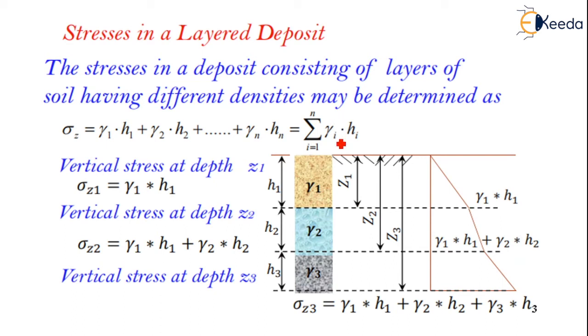What about the stresses in a layered deposit? The stress in a deposit consisting of layers of soil having different densities may be determined as sigma Z is equal to gamma 1 H1 plus gamma 2 H2 and so on till gamma N HN. It can also be written as summation i is equal to 1 to N gamma i into Hi. If you take this example, the vertical stress at the depth Z1 is sigma Z1 is equal to gamma 1 into H1.